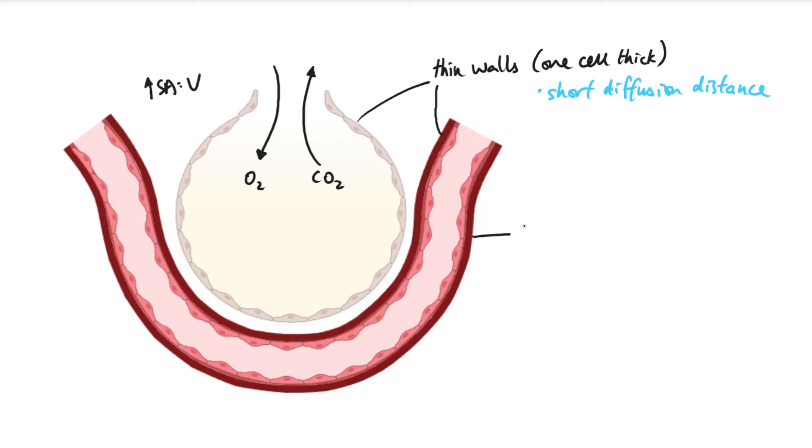The existence of the capillaries, we say that they have lots and lots of capillaries. So an extensive capillary network. Now the benefit of this is that because there's so many capillaries around it, the moment the oxygen goes into the blood, it can be quickly carried away. So we mean that this means that you are maintaining a steep concentration gradient for faster diffusion.